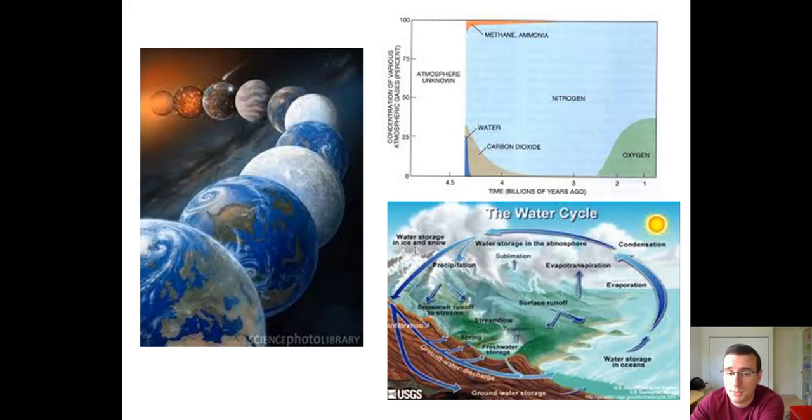Oxygen would not become a part of the atmosphere until much, much later, when life became part of the Earth and the production of oxygen would actually increase through processes such as photosynthesis, which means the early atmosphere did not have oxygen. And that's a very important point because without oxygen in the atmosphere, it makes it more likely for life to have evolved.